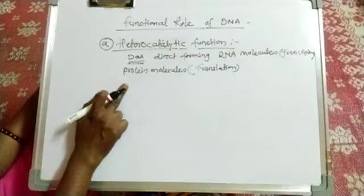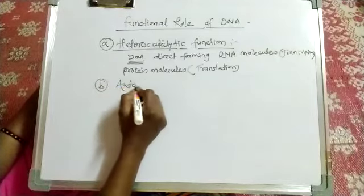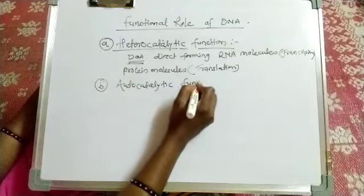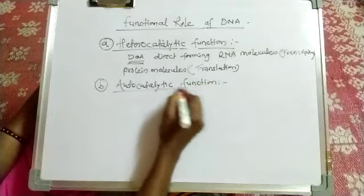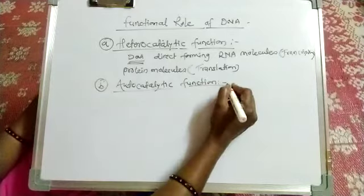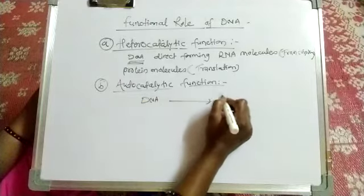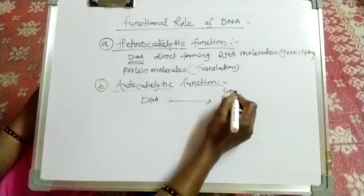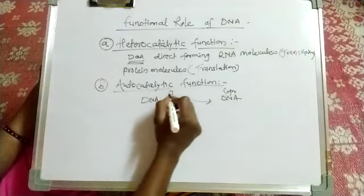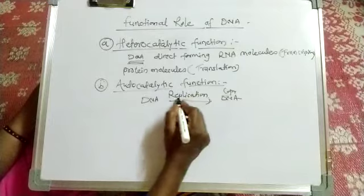The other function is autocatalytic — 'auto' means self. In the autocatalytic function, DNA can make a copy of itself. This is called replication or duplication. Replication means making a duplicate copy of DNA.